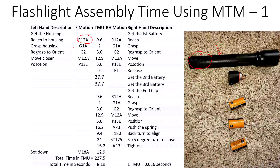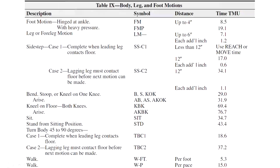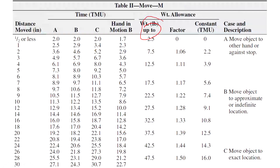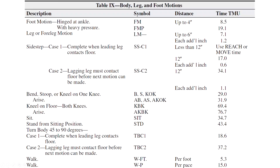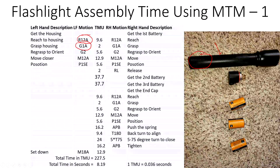Once we reach for the housing, we have to grasp it. The grasping code is G1A — a very simple grasp for a nicely graspable object, not really complicated. You can read the grasp table for all the definitions. G1A is the simplest grasp possible. Then I grasp it and re-grasp it.